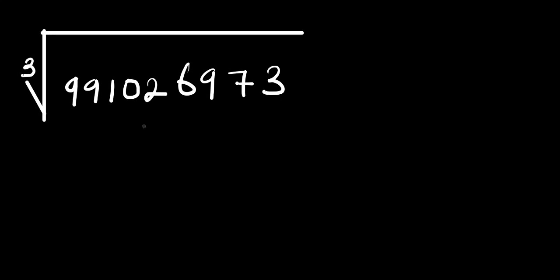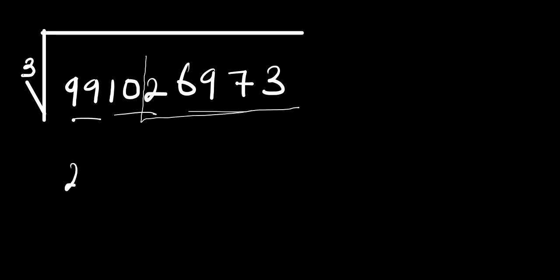Hello, you are welcome. How to find the cube root of a number without making use of a calculator. So we have 9,910,269,973. Now what we are going to do is we can copy this number out — let's consider the part where we have 26,973.